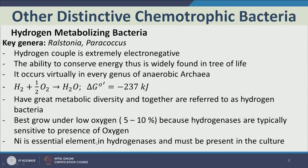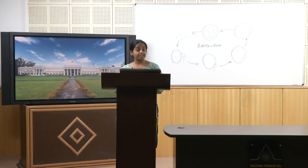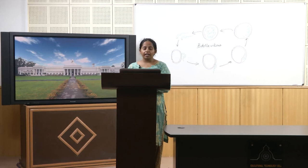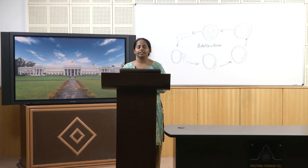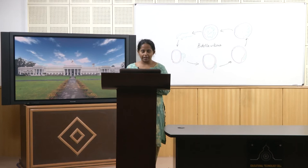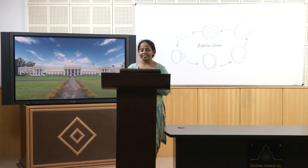Another distinct type of chemotrophic bacteria are hydrogen-metabolizing bacteria. The key genera are Ralstonia and Paracoccus. You can imagine they are oxidizing hydrogen because hydrogen is extremely electronegative and wants to give electrons away, while oxygen is extremely electropositive. The ability to conserve energy using hydrogen is found widely across the tree of life — they are phylogenetically very diverse, not limited to Ralstonia and Paracoccus but found in many different phyla. It occurs virtually in every genus of anaerobic archaea.